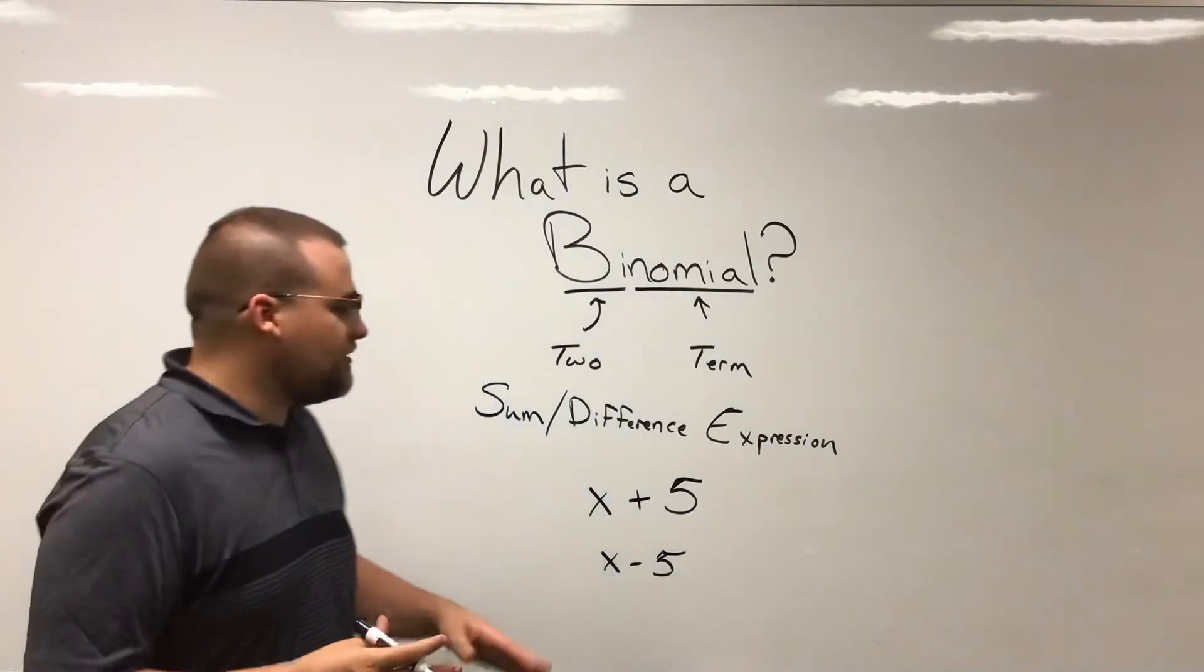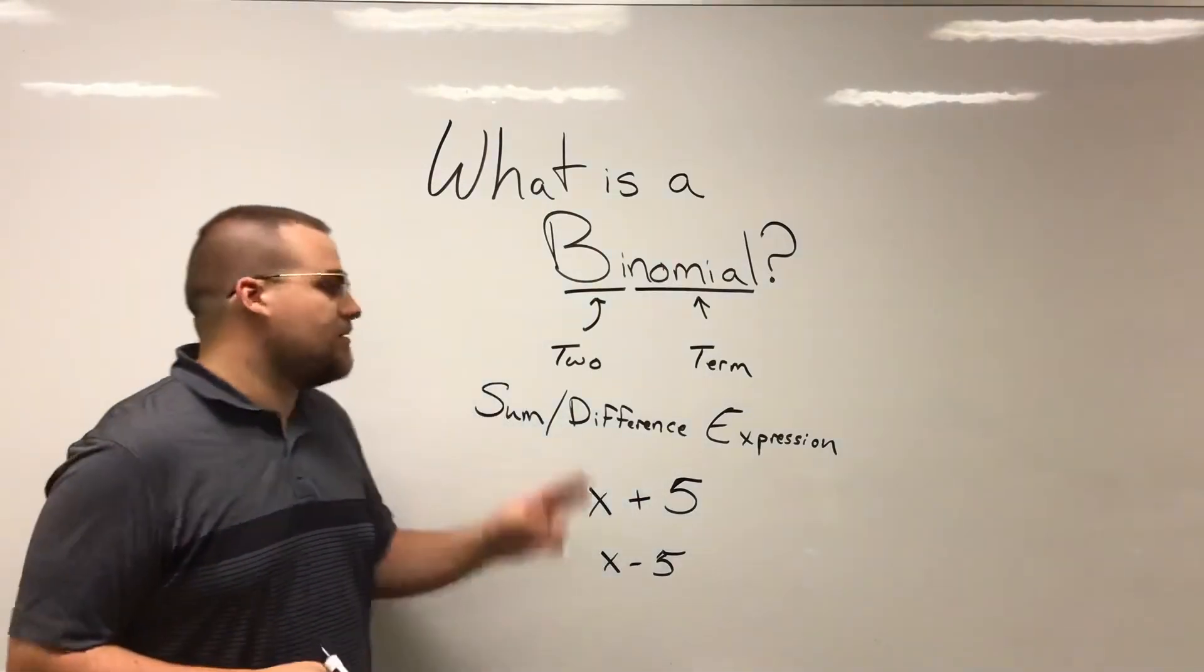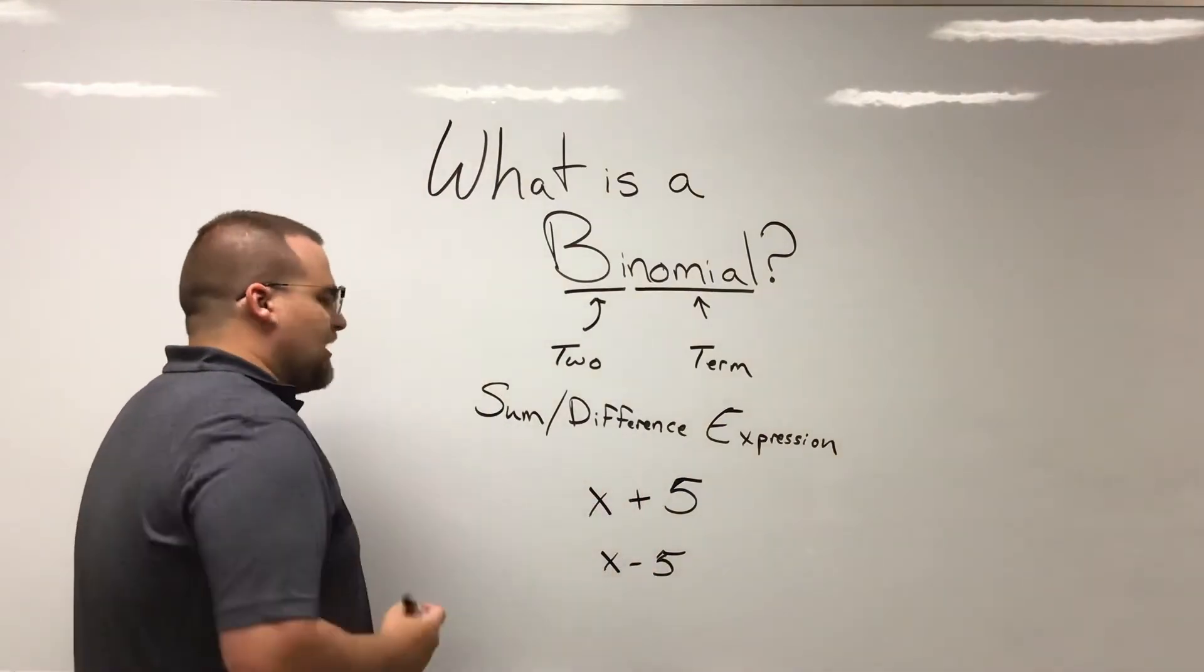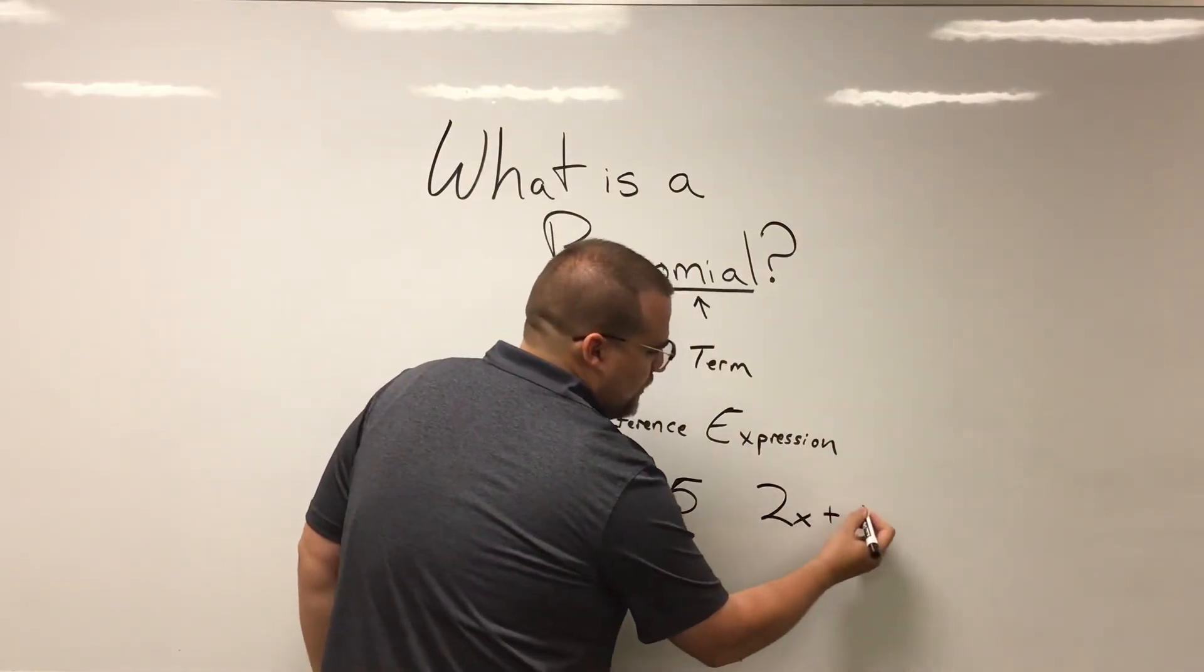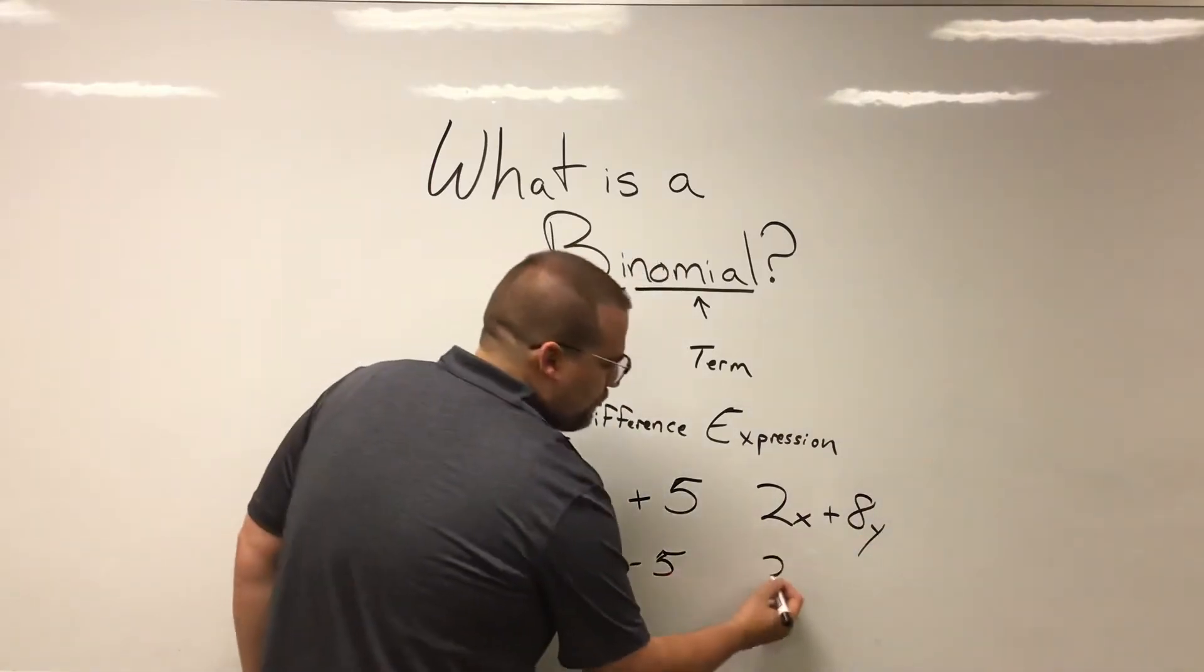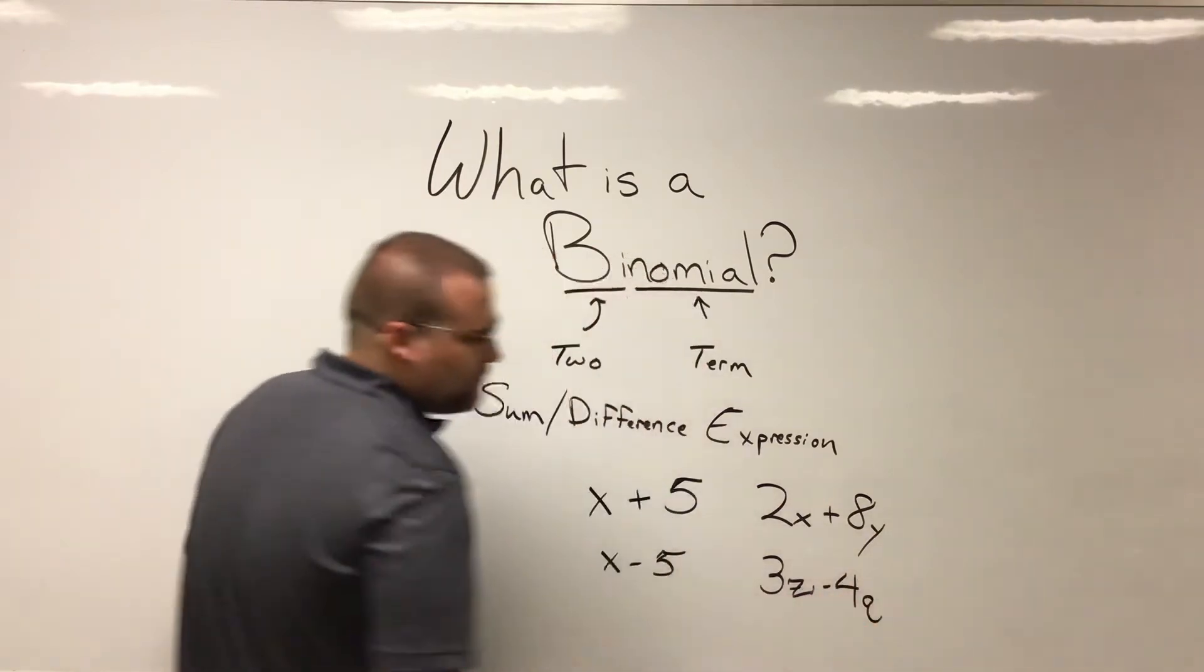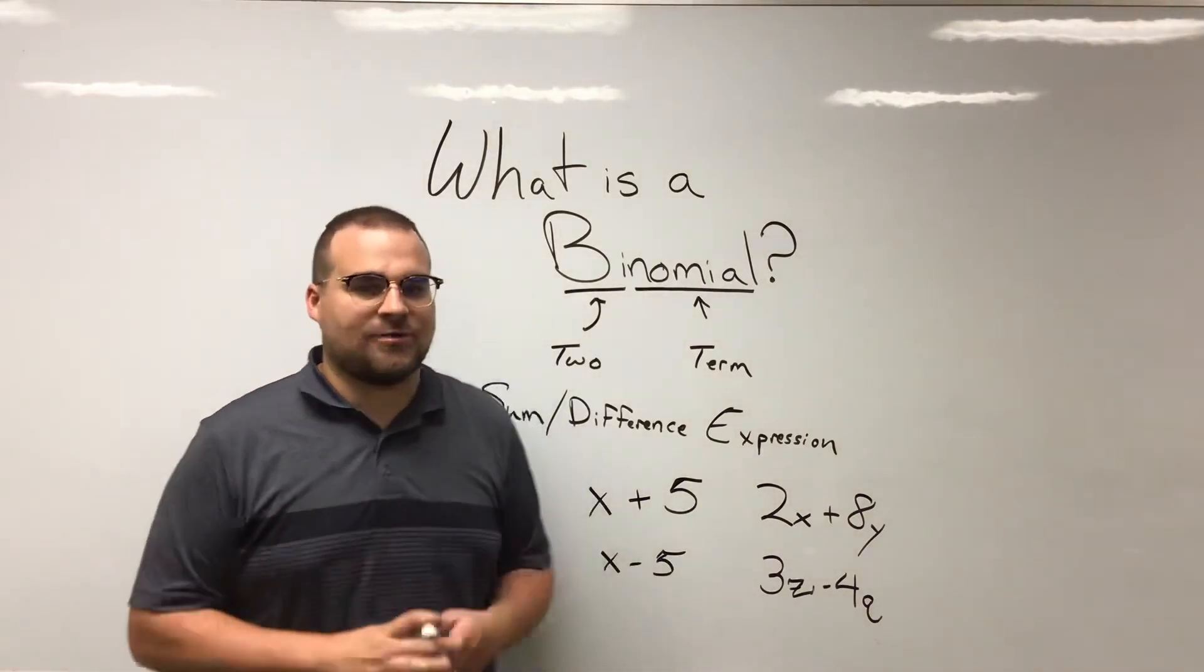The reason that a binomial must be sum or difference is because it must be two terms. It must be two things that cannot be put together. So another example of this would be 2x plus 8y, or maybe 3z minus 4q. Whatever it might be. Any two things that are different, adding or subtracting.